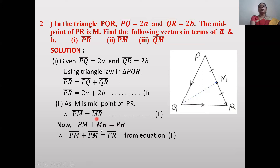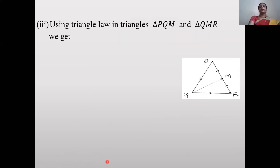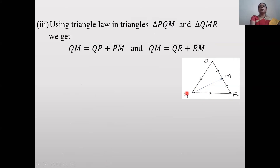From equation 2, MR̄ = PM̄. Substituting: PM̄ + PM̄ = PR̄, so 2PM̄ = 2ā + 2b̄ (from equation 1). Dividing throughout by 2, PM̄ = ā + b̄. Suppose this is equation 3.